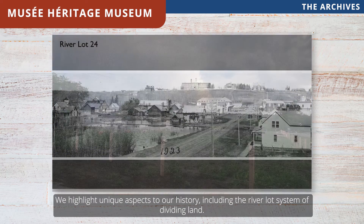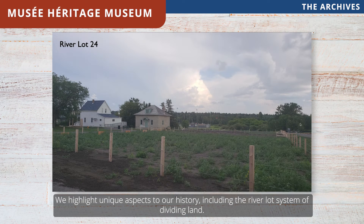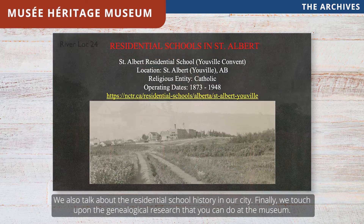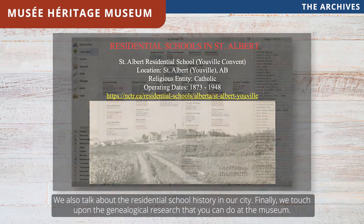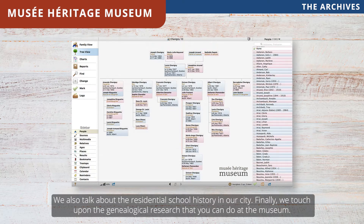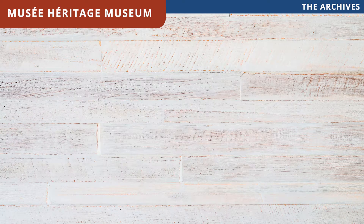We highlight unique aspects of our history including the river lot system and dividing land. We also talk about the residential school history in our city. Finally, we touch upon the genealogical research that you can do at the museum.